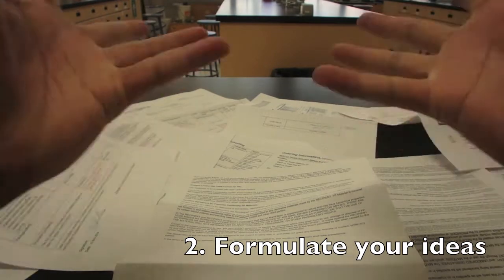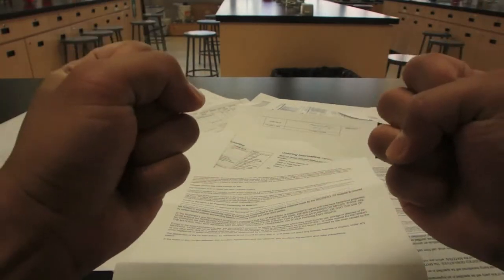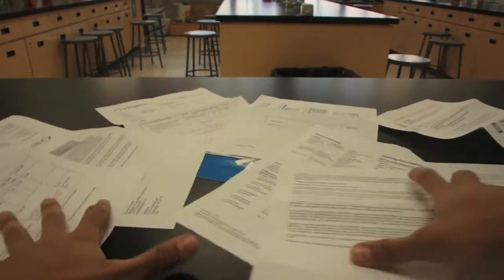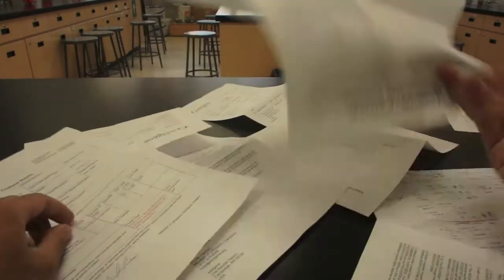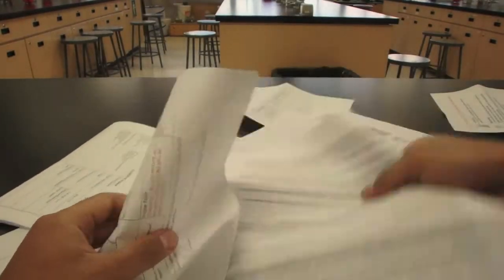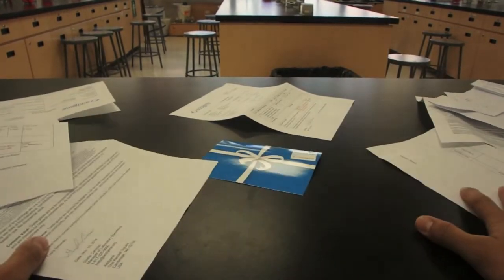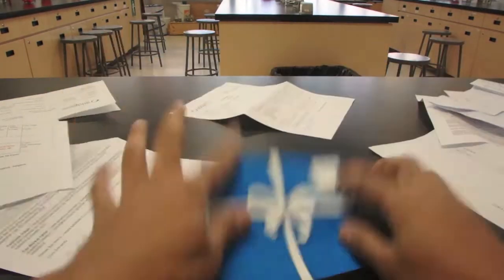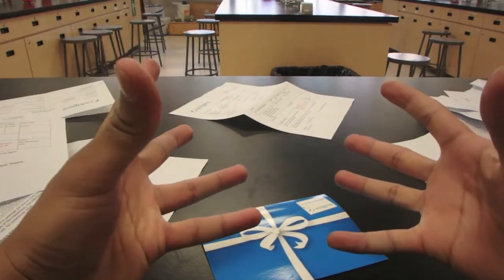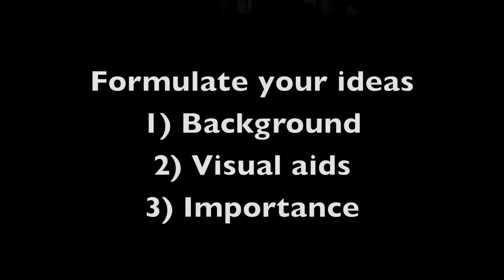Step two, formulate your ideas. You may come across a ton of information, but a lot of this information may be irrelevant for your presentation. Find your key ideas, find your important images, order them in terms of relevance, and make connections. This is just my standard on how I formulate my ideas. I start off with background, go to visuals, and then important things.